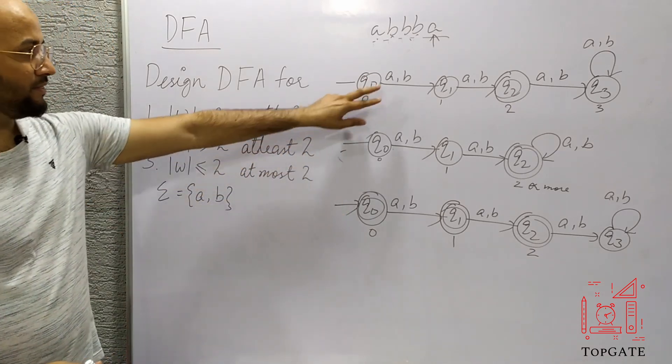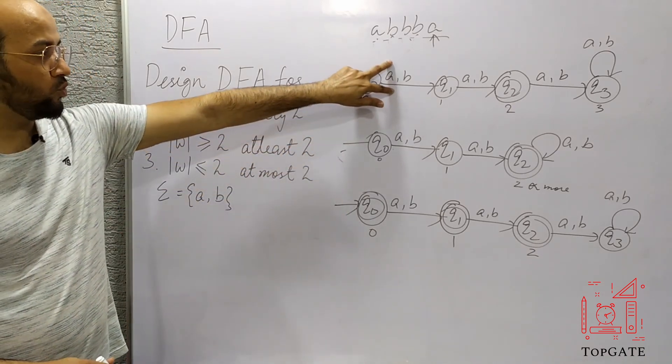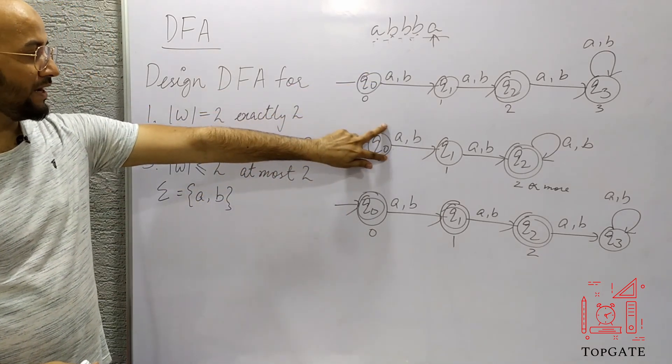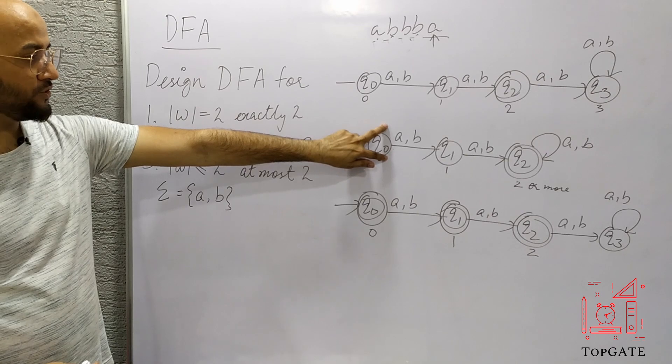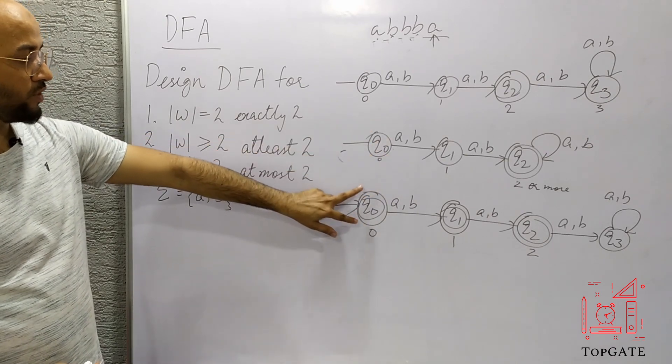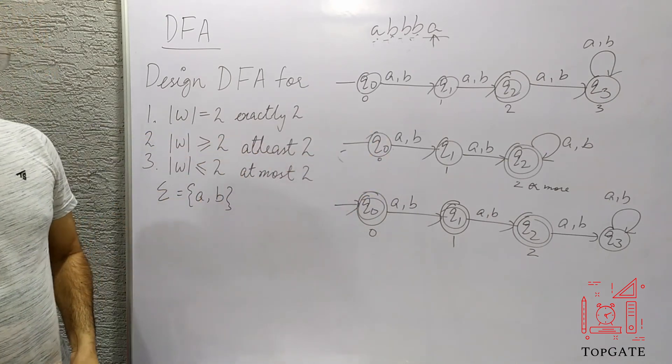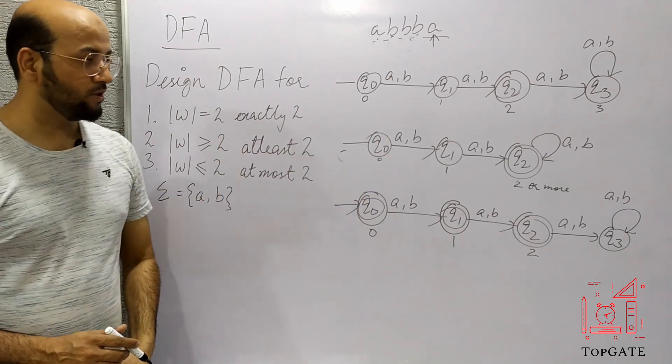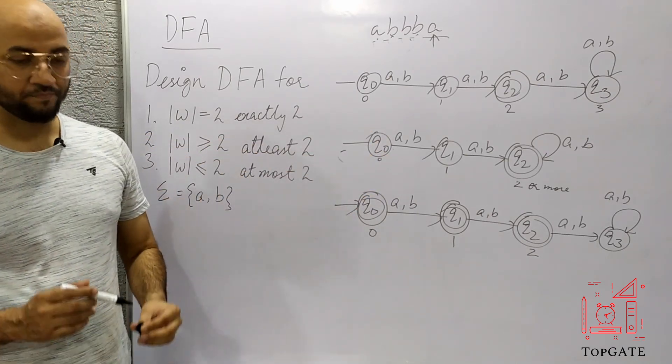So these are the three DFAs: one for length exactly two, one for length at least two, and one for length at most two. Thank you so much.